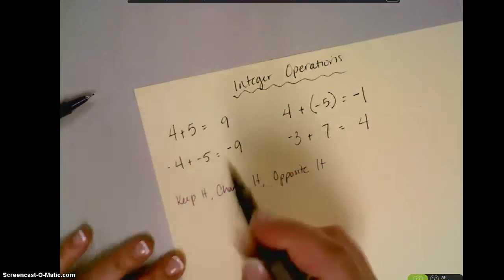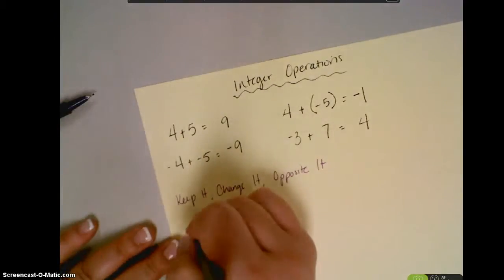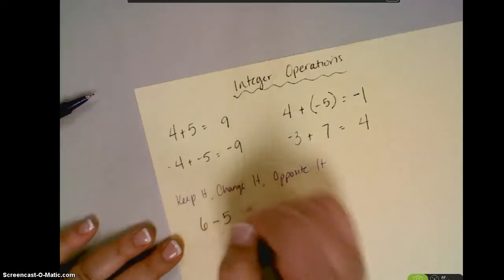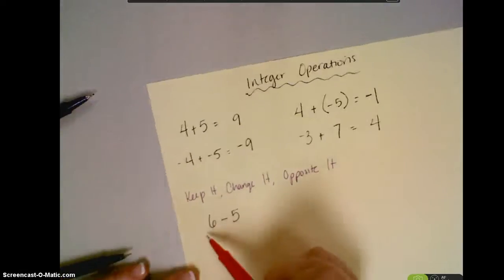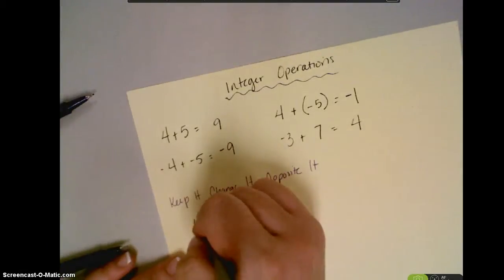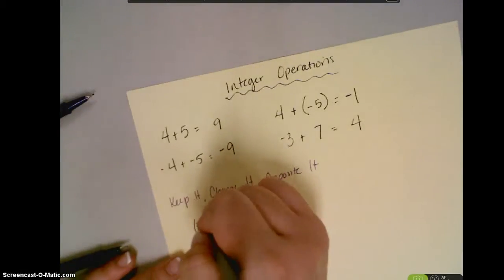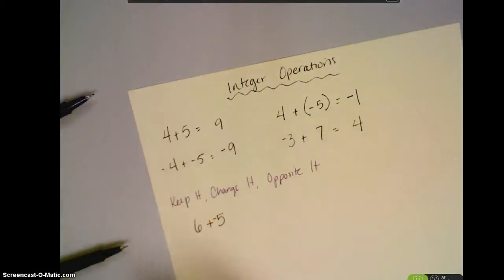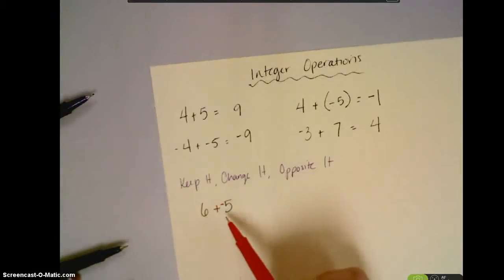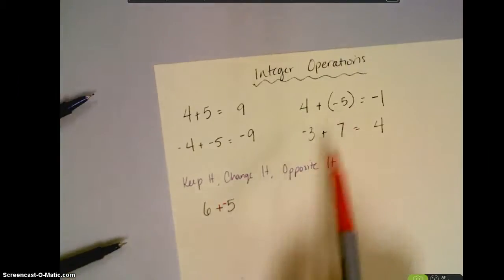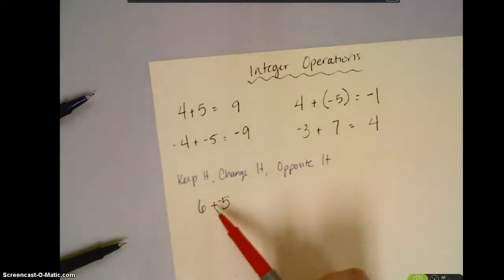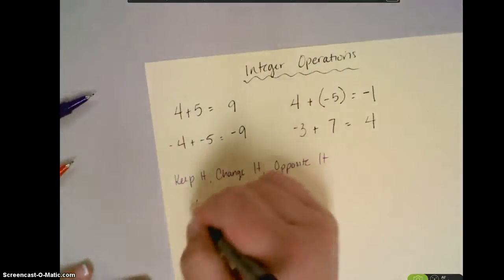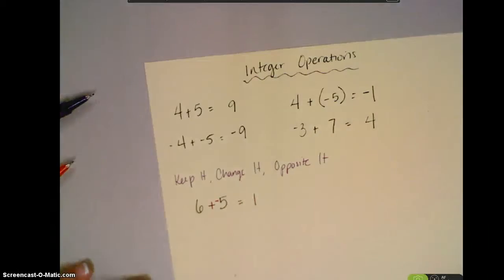So, if I have 6 minus 5, I would keep the first number, change the sign to addition, and then change the second number to its opposite, which would be negative 5. So, now I have 6 plus negative 5. I'm going to follow my addition rules. Signs are different, so I'm going to subtract: 6 minus 5 is 1, and then the positive is bigger, so the answer would be 1.